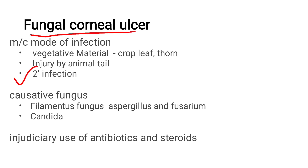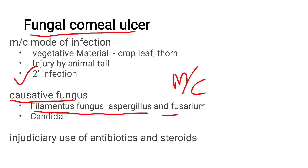Next is the causative organism. The most common causative fungus is filamentous fungus, which includes Aspergillus and Fusarium — the most common types. Yeast-like organisms such as Candida can also cause Fungal Corneal Ulcer.